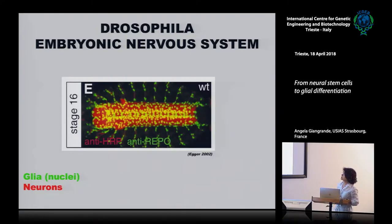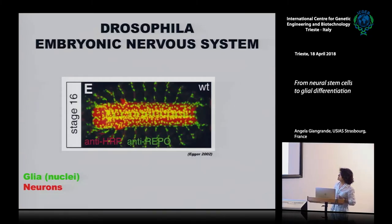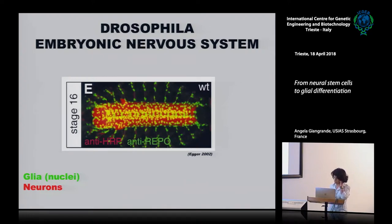This is what the nerve cord of the differentiated embryo looks like. As I told you yesterday, this corresponds to the spinal cord in invertebrates. In red, we have all the axon bundles — the neurons, basically, in the ventral cord. In green, you have a nuclear marker for VIA, which is this protein called REPO. You will see how the ventral cord is completely decorated with these VIA cells, but also the peripheral nerves that get into and out of the ventral nerve cord.